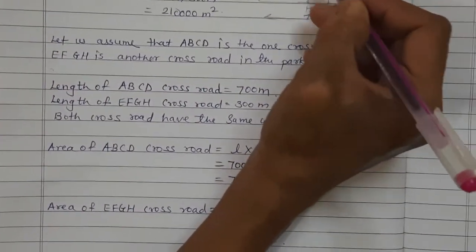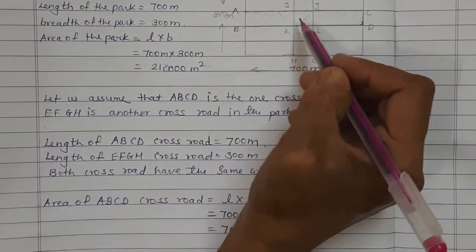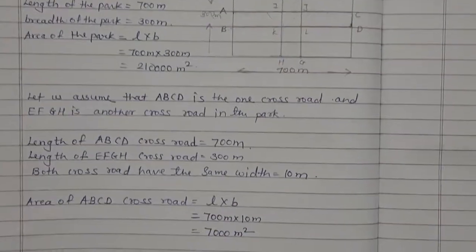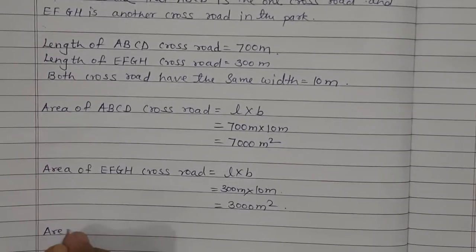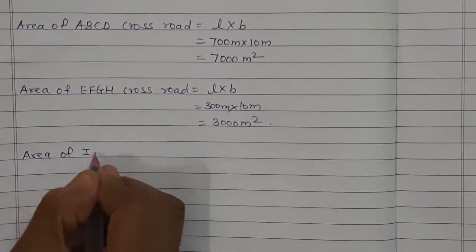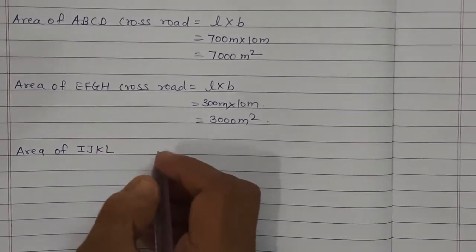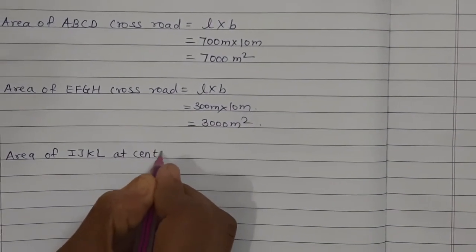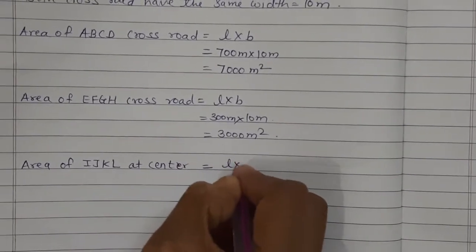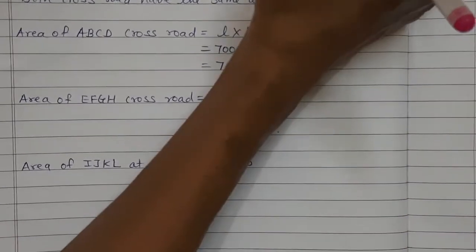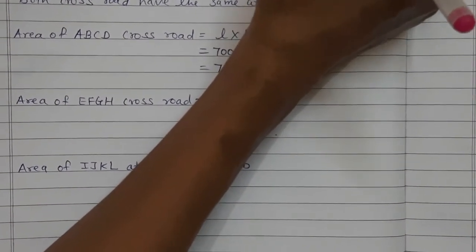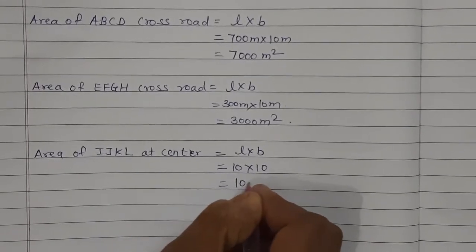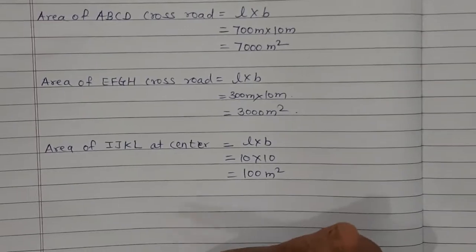Now what we have to find? We have to find the area of IJKN at the center. Length multiplied by breadth. From everywhere the width is 10, so 10 into 10. So what we will get? 100 meter square.